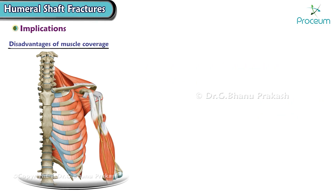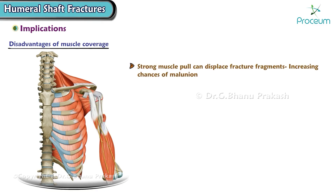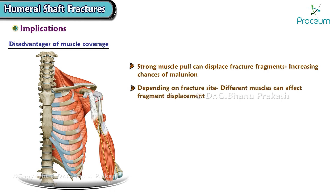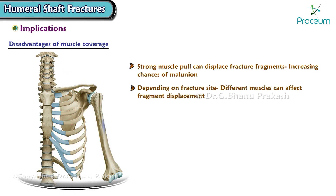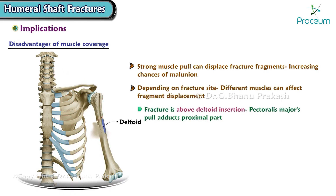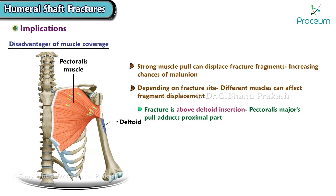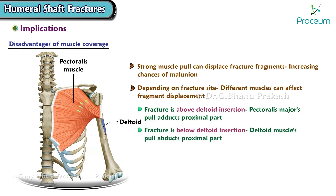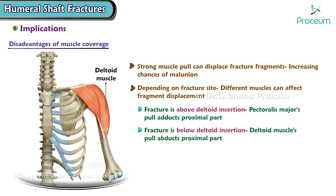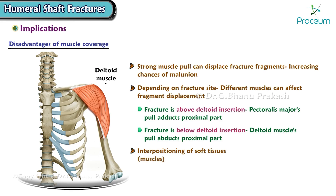However, strong muscle pull can displace fracture fragments, increasing the chances of malunion. Depending on the fracture site, different muscles affect fragment displacement. If the fracture is above the deltoid insertion, the pectoralis major's pull adducts the proximal part. If the fracture is below the deltoid insertion, the deltoid muscle's pull abducts the proximal part. Interposition of soft tissues such as muscles may also impede bone union, leading to nonunion.